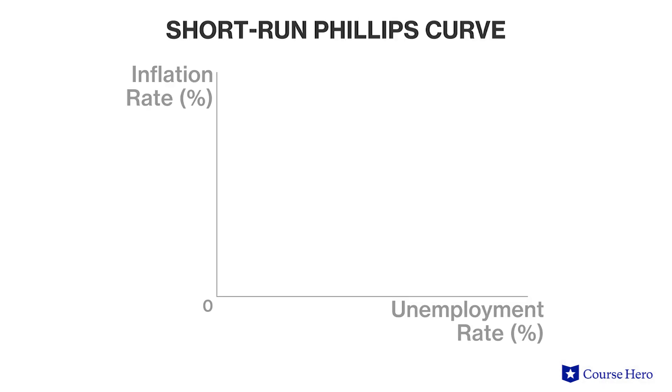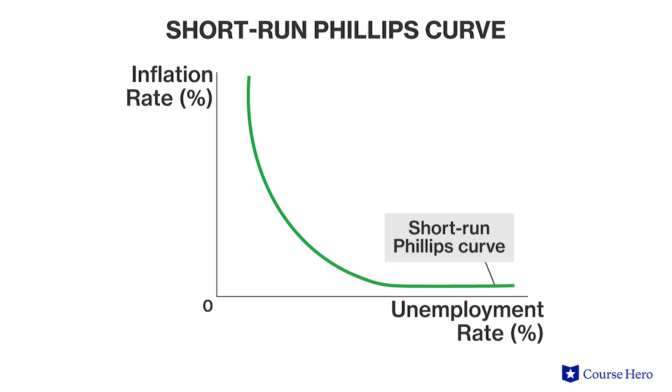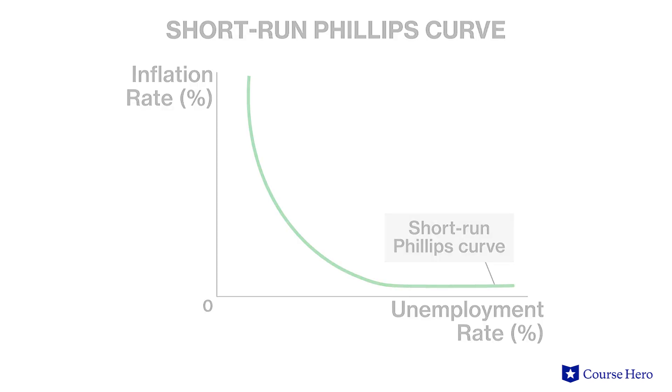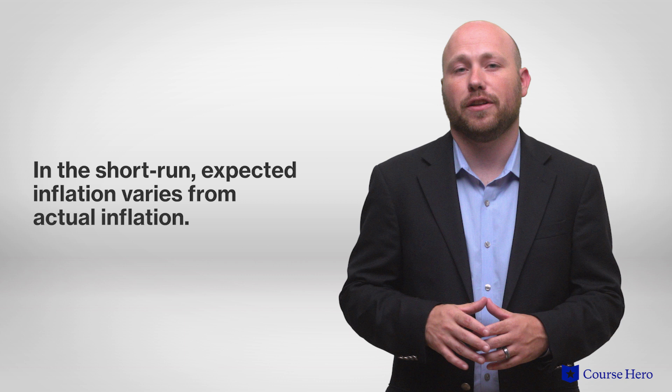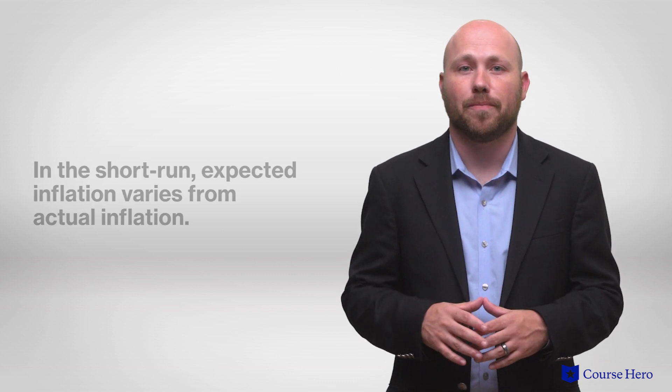So while the unemployment rate would have decreased, the increase in prices would cause inflation to increase. The Phillips curve depicts the inverse relationship between inflation and unemployment only in the short run, because it is only in the short run that expected inflation varies from actual inflation.